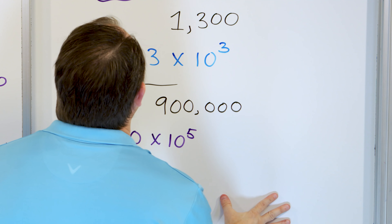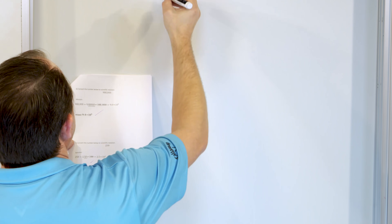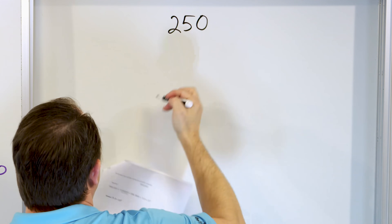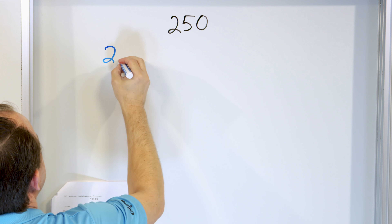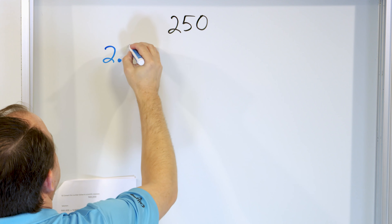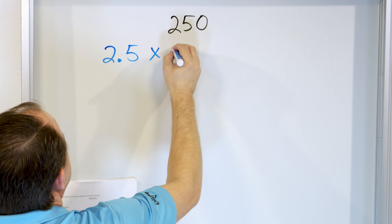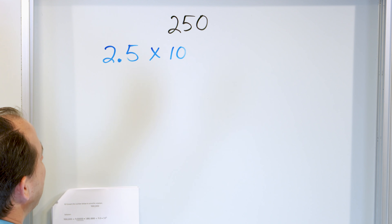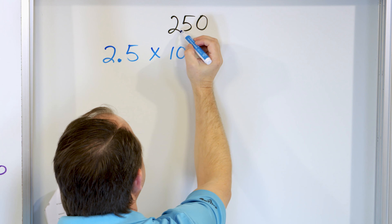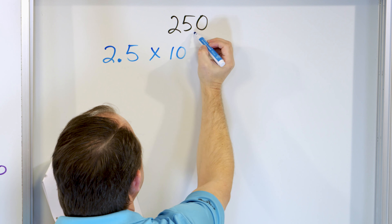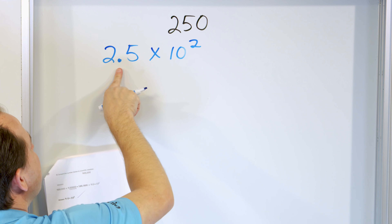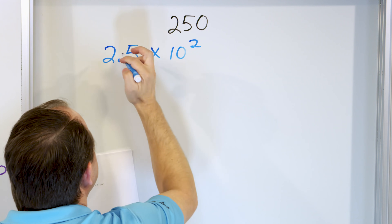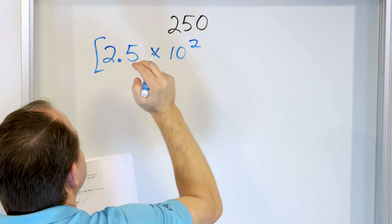What about the number 250? Take the first digit, 2, put a decimal point, take the next digit, 5. You have 2.5 times 10 to the power of what? The decimal is between the 2 and the 5, so it has to move 1, 2 spots. Multiply by 10 to the 2, which is 100. So 2.5 times 100 moves the decimal two spots and gives you 250.